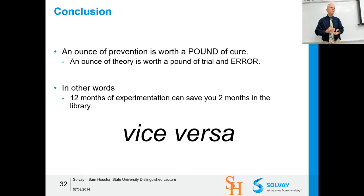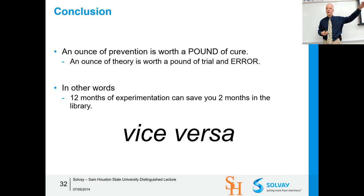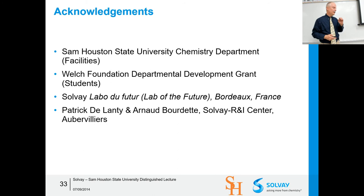12 months of experimentation can save you two months in the library — or rather, two months in the library can save you 12 months in the lab. That's why we always emphasize literature searches: you can spend 12 months in the lab and then find a paper that would have guided you to the end point much sooner. This work was supported by the Welch Foundation developmental grant, which paid for students to generate the POV-Ray images and continues to this day.